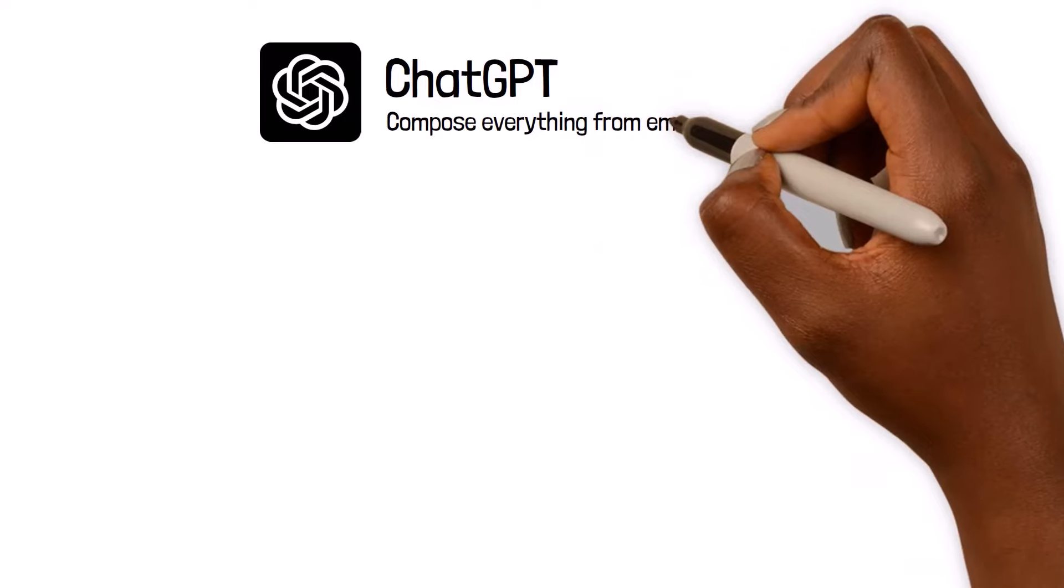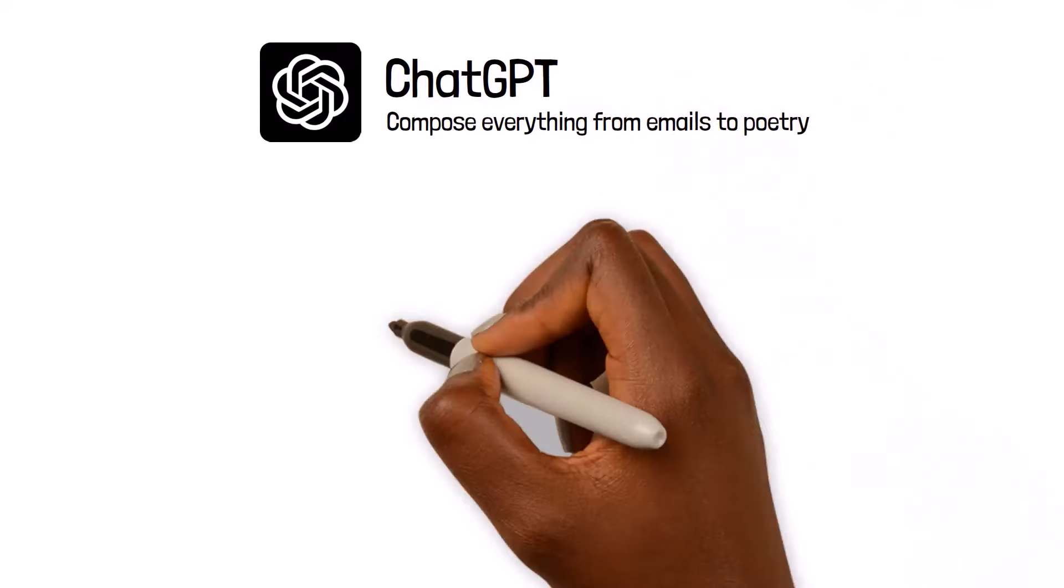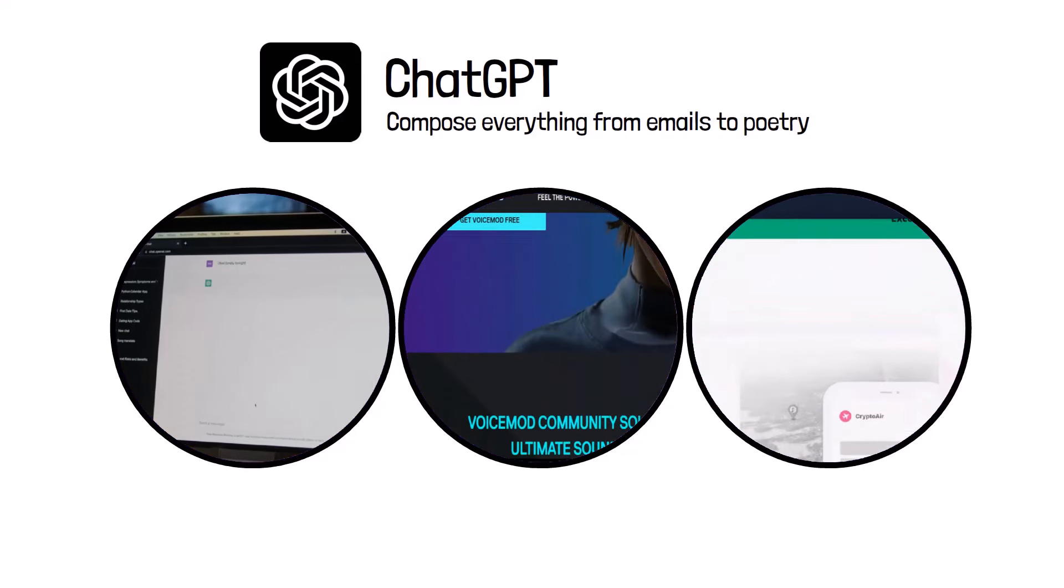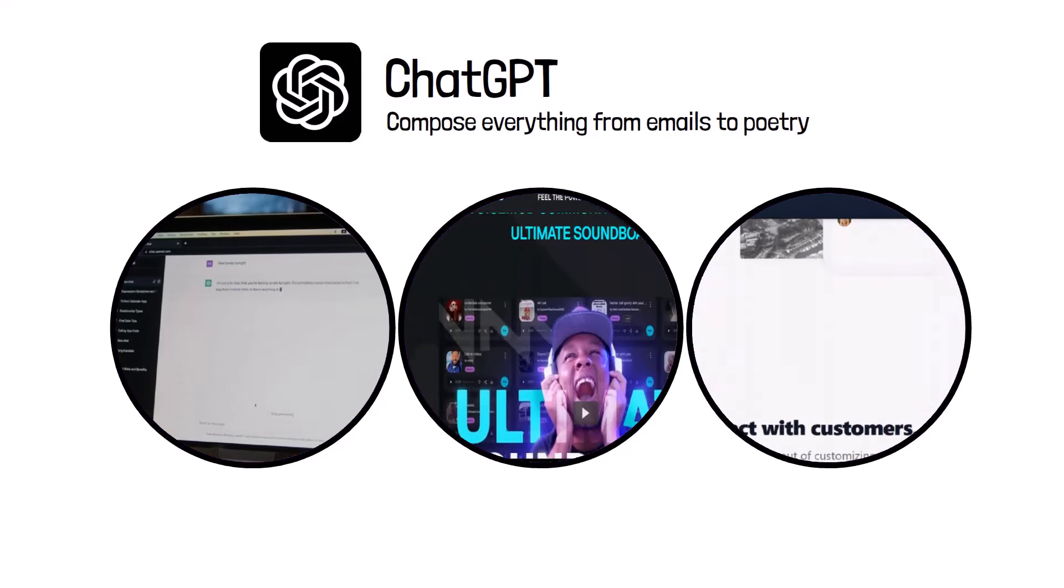AI-powered tools like ChatGPT can compose everything from emails to poetry. These tools can also generate new music, videos, and even websites from simple text prompts.